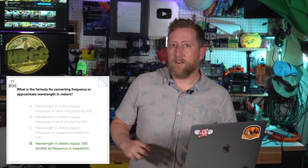T3B06: What is the formula for converting frequency to approximate wavelength in meters? The answer is D — wavelength in meters equals 300 divided by frequency in megahertz. Note: in the last video I said 234, but that was to get the answer in inches. This formula gives wavelength in meters: 300 divided by the frequency in megahertz will spit out that distance in meters.